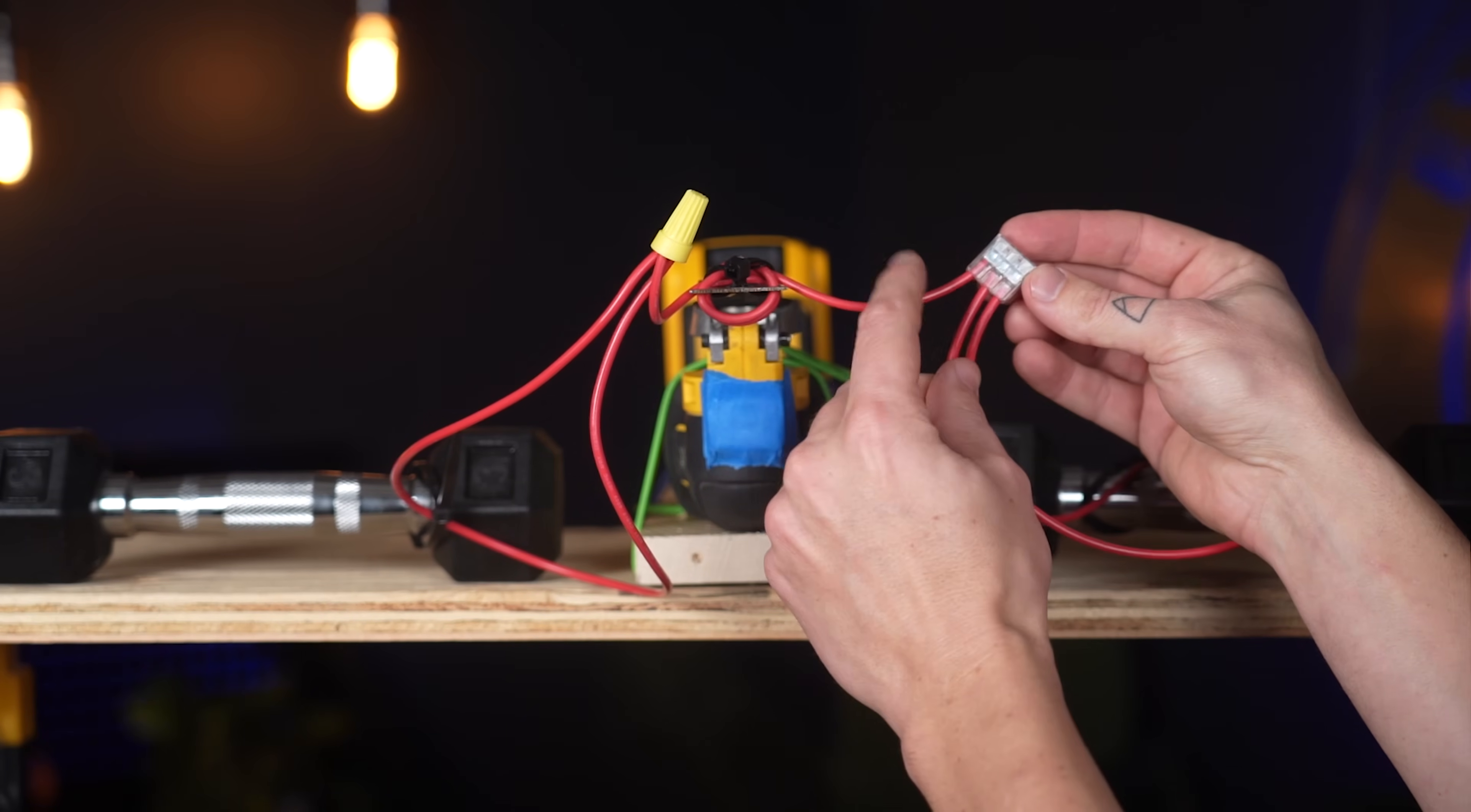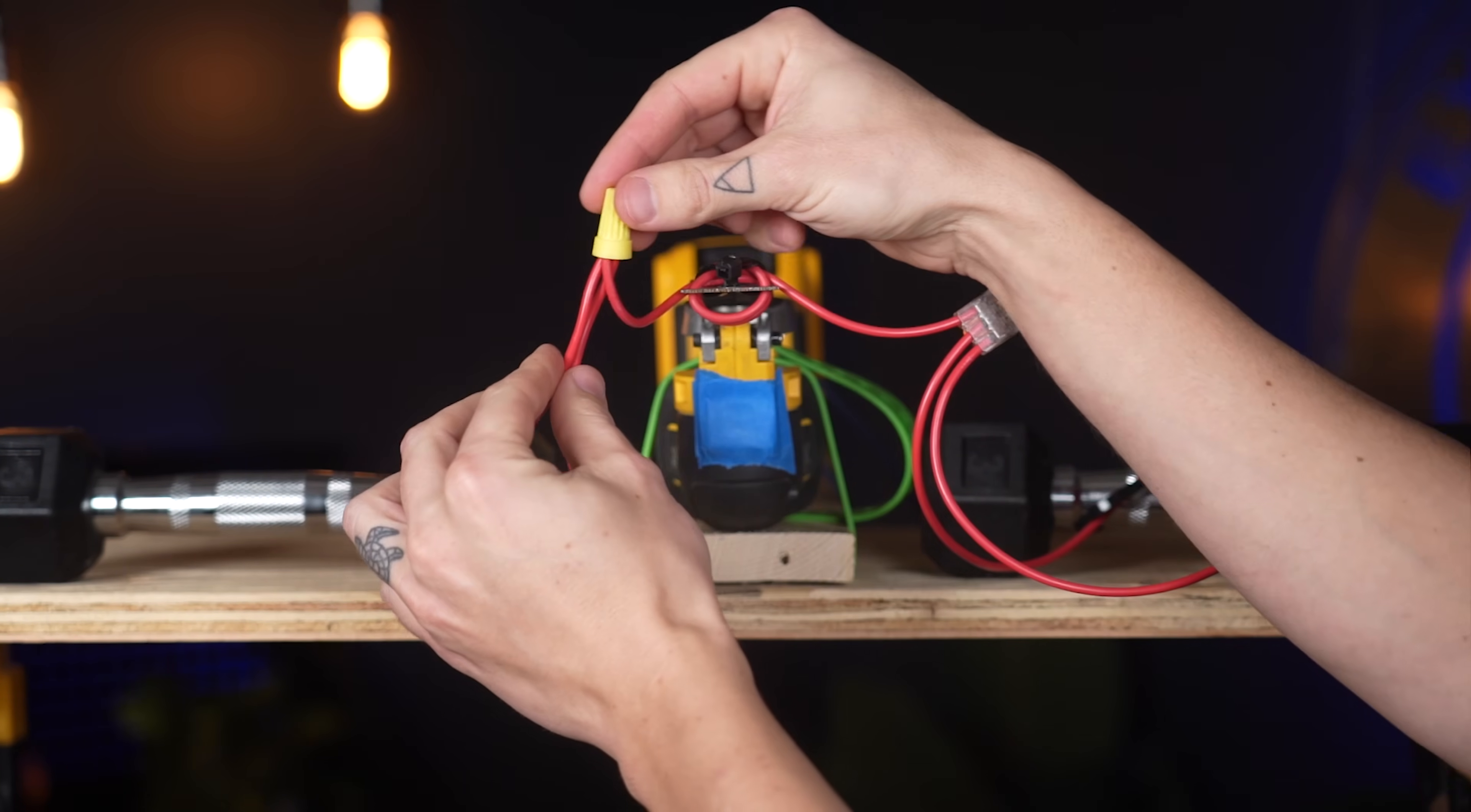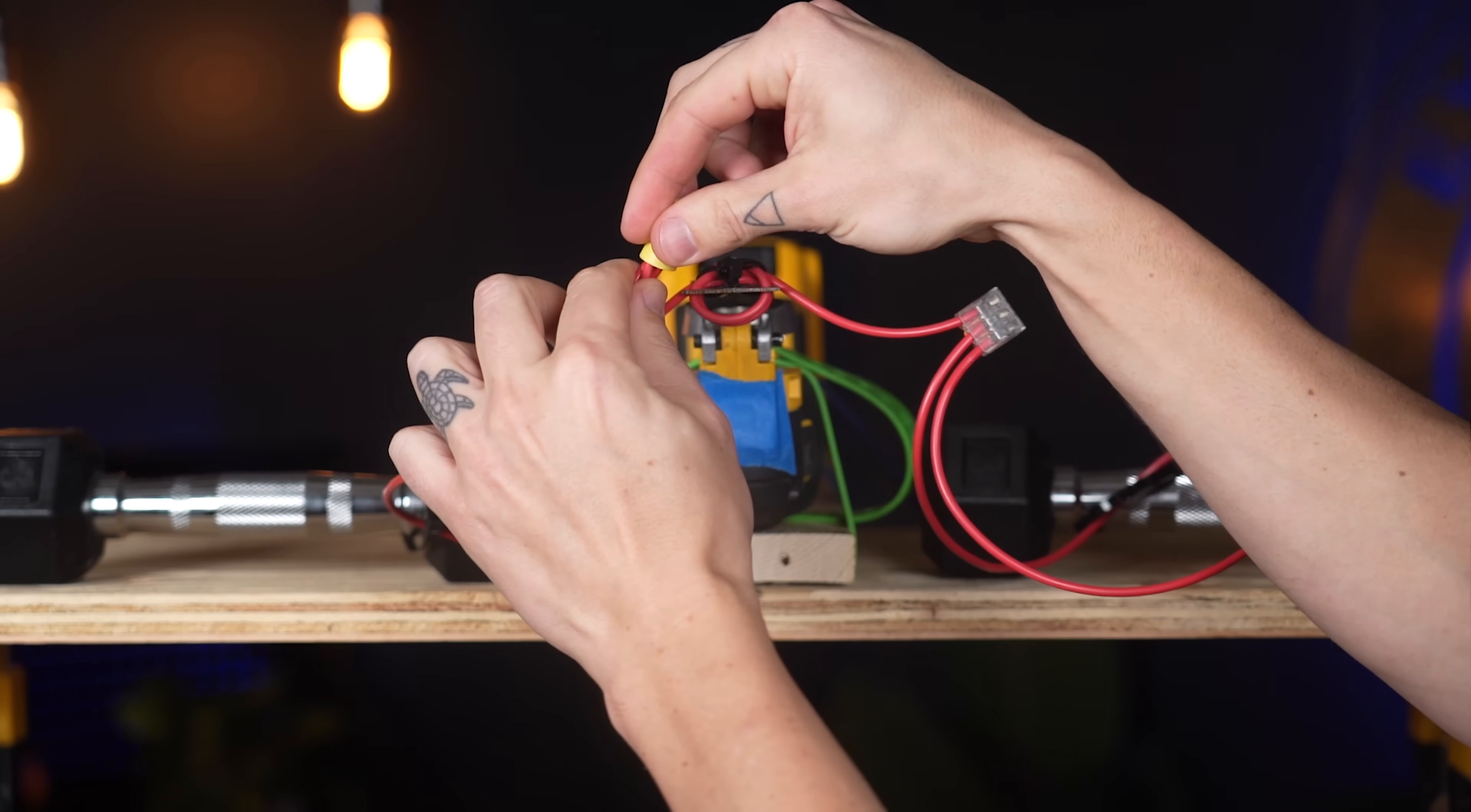Got all my 14-gauge wires connected to the lever nut on this side. Visually inspected it through the back so I can tell that all the wires are in there nice and neat. And the wire nut over on this side. I can't really visually inspect it, but I give those a little tug to make sure that they're good to go.